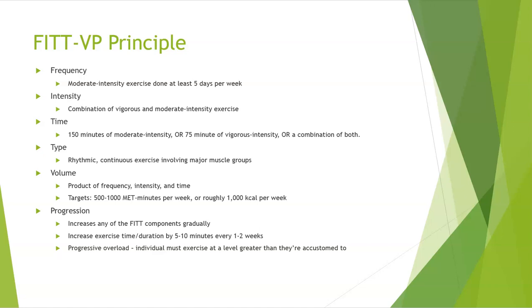The FITT principle as it pertains to selecting appropriate exercise for healthy populations: Frequency — moderate intensity exercise done at least five days per week. Intensity — a combination of vigorous and moderate intensities is usually best. Time — roughly 150 minutes of moderate intensity, or 75 minutes of vigorous intensity, or a healthy combination of both. Type — rhythmic continuous exercise involving all major muscle groups. Volume — the product of frequency, intensity, and time; targets are about 500 to 1,000 MET-minutes per week, or roughly 1,000 kcals per week.